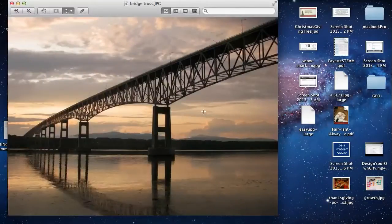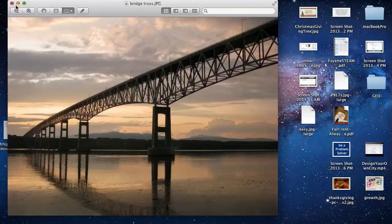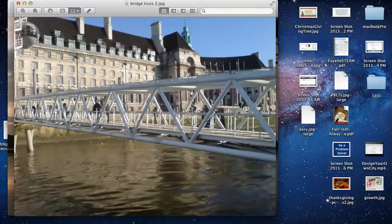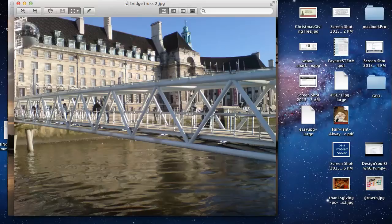Two, bridges are made out of triangles. That's how you get the best support, is by creating a triangular structure. So there's one bridge. There's another bridge. It's probably a walking bridge.